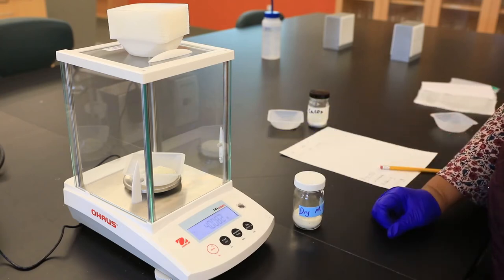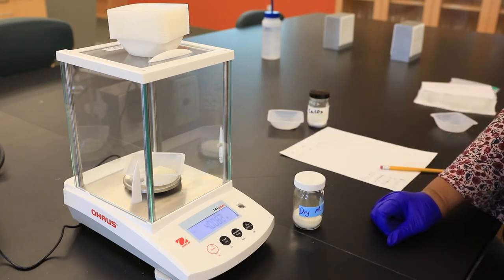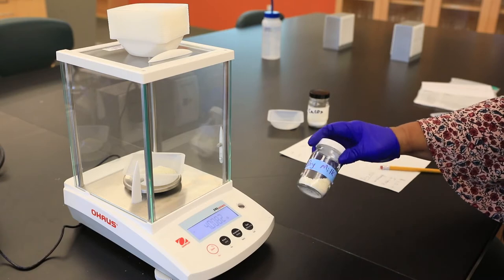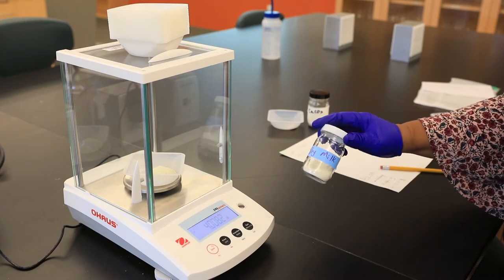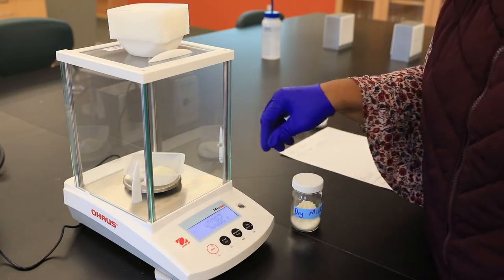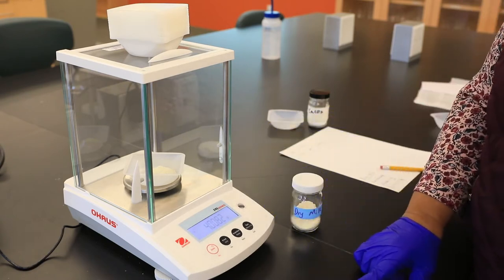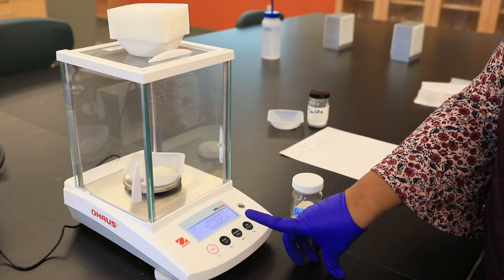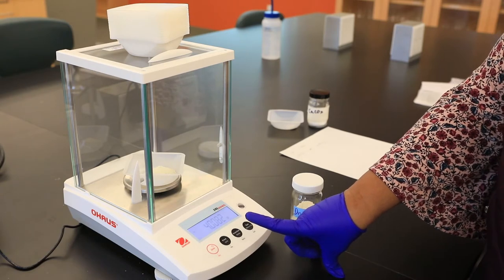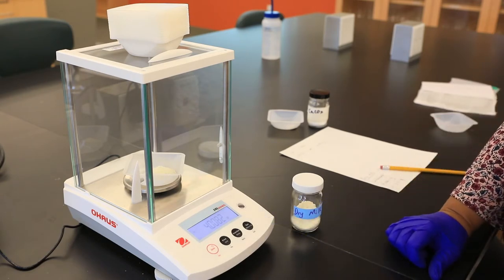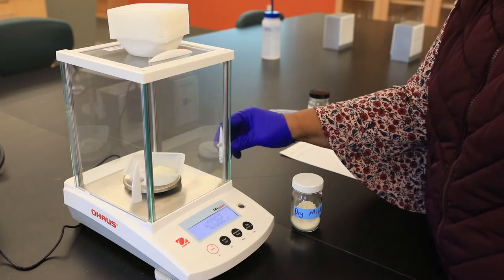In this lab, our goal is to isolate the protein casein from milk. We're using dried milk, and I've pre-weighed the amount needed - approximately 4 grams. You can record this value down: 4.008 grams of dried milk.